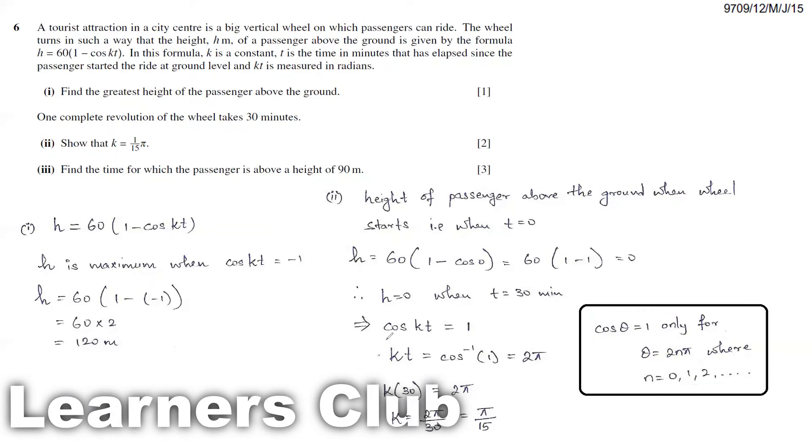Here cos kt equals 1. So kt, that is cos inverse 1, equals 2π. I'm taking my first value after zero. The next 30 minutes, the next time that is going to be when kt is 2π. Since they have mentioned it's given in radians, I've taken it 2π.